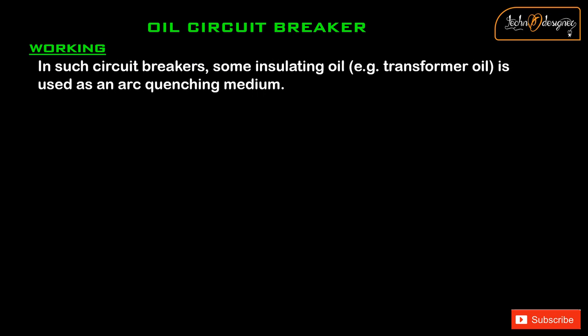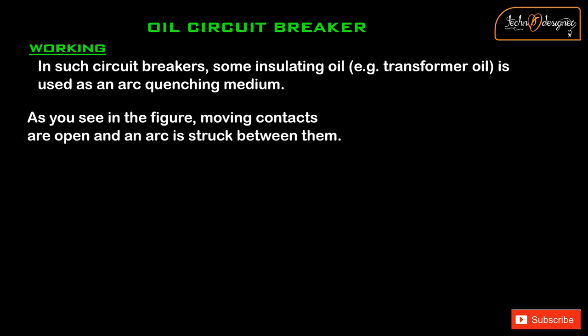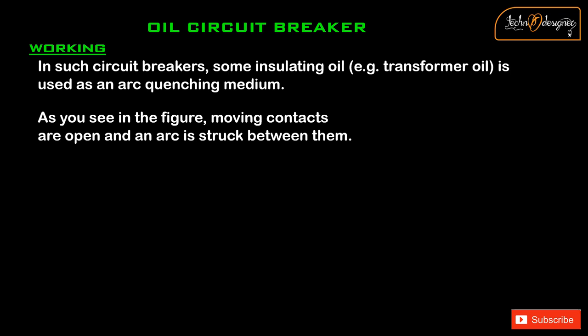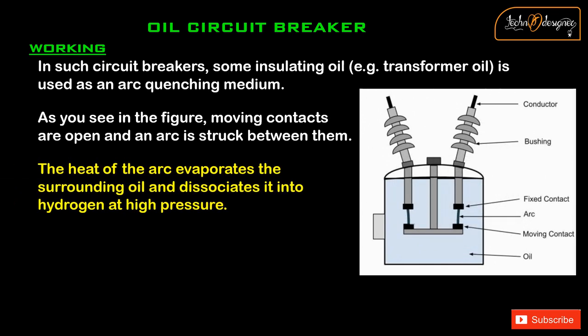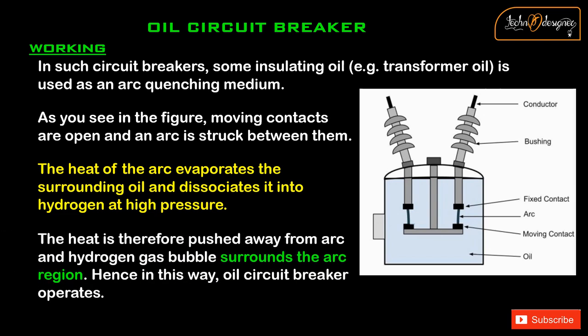Oil circuit breaker — Working: In such circuit breakers, some insulating oil, for example transformer oil, is used as an arc quenching medium. As seen in the figure, moving contacts are open and an arc is struck between them. The heat of the arc evaporates the surrounding oil and dissociates it into hydrogen at high pressure. The heat is therefore pushed away from the arc, and a hydrogen gas bubble surrounds the arc region, thus allowing the oil circuit breaker to operate.